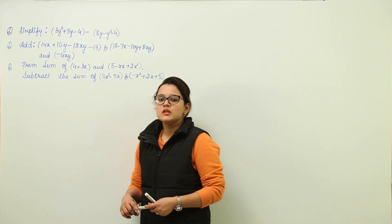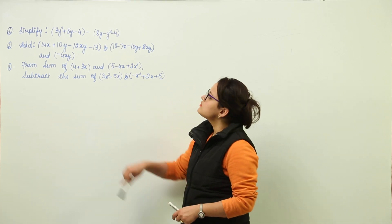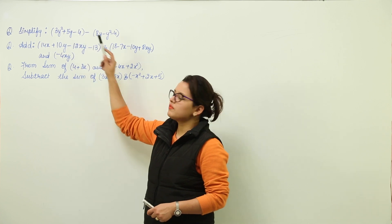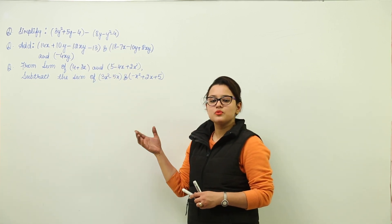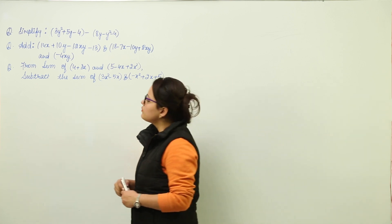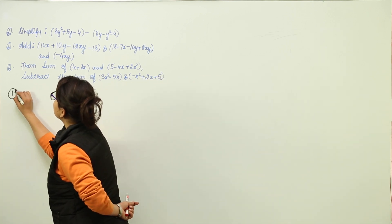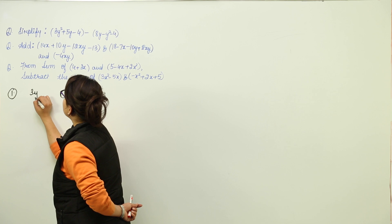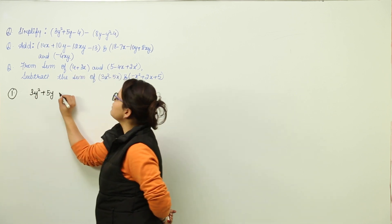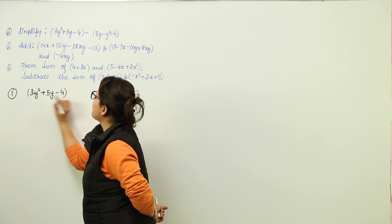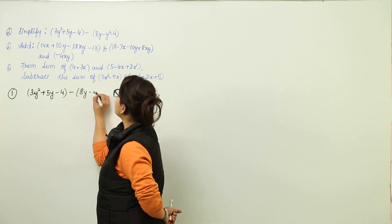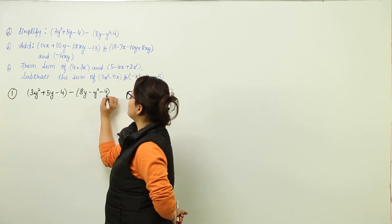Let's do some questions now. The first one has two expressions given with a subtraction sign, meaning they are to be subtracted and simplified further. We will start with the simplification by writing the same question first: 3y squared plus 5y minus 4, minus 8y minus y squared minus 4.